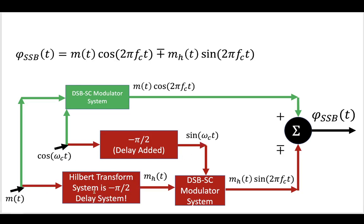In the bottom here, the message goes through a Hilbert transform system with another phase delay so that you get your Hilbert transformed message. Then the message and your sine wave pass through that other DSBSC modulator to give you the second term of this single sideband equation.